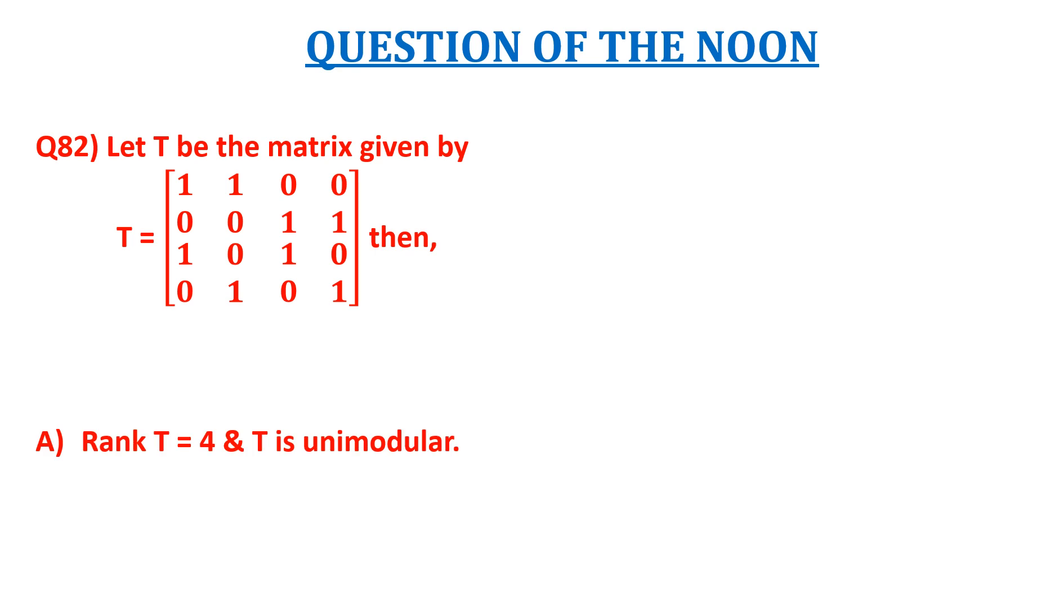then the options are: A, rank of T is equal to 4 and T is unimodular; B, rank of T is equal to 3 and T is not unimodular;